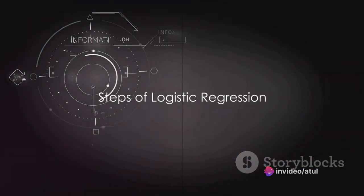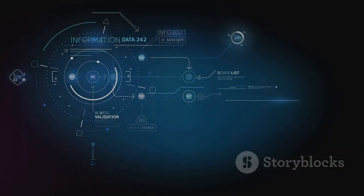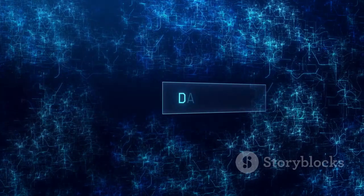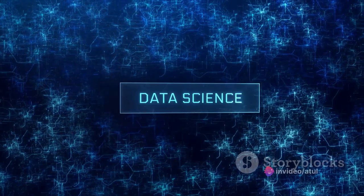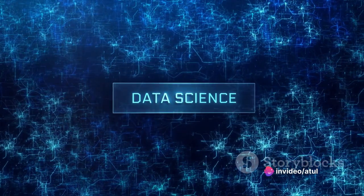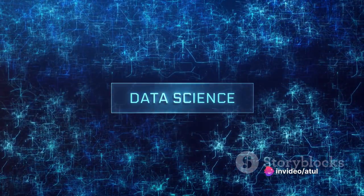Now let's break down the process of logistic regression into 5 easy steps. Step 1: Collecting data. You need a data set to perform logistic regression. This data set should include your independent variables and the binary outcome you're trying to predict.